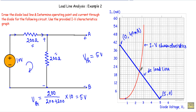The DC load line and the IV curve intersect at the operating point, also called the Q point. From the graph, this Q point has a coordinate of approximately Vdq ≈ 2.5 V. Reading off the current axis — which shows values of 18, 19.5, and 21 mA in that region — the corresponding current at the Q point is approximately 20 mA.